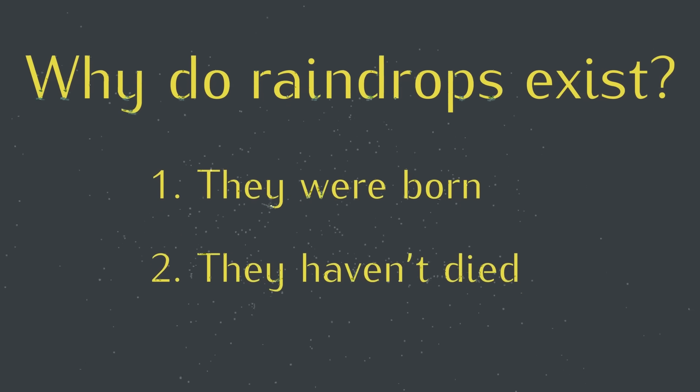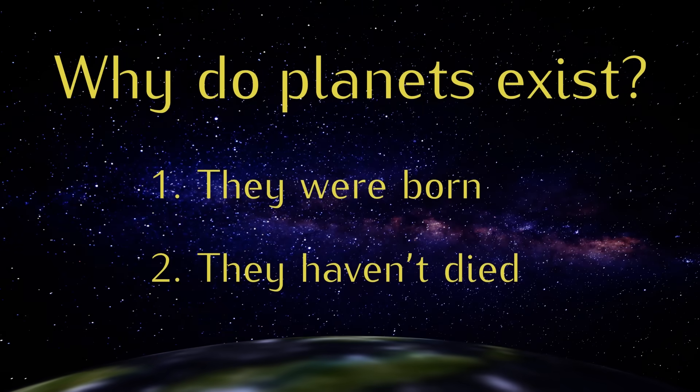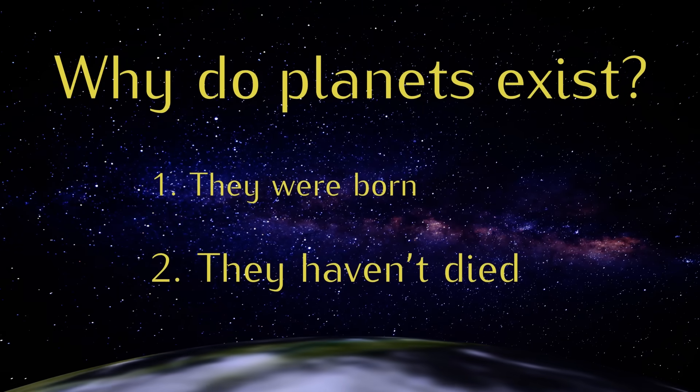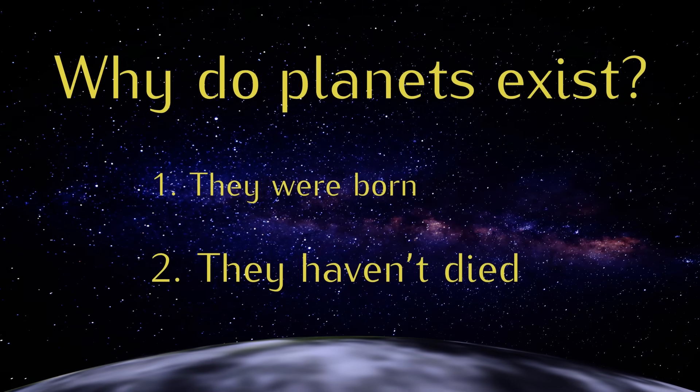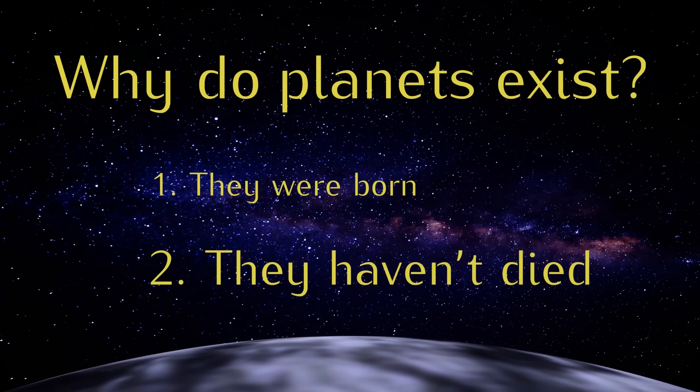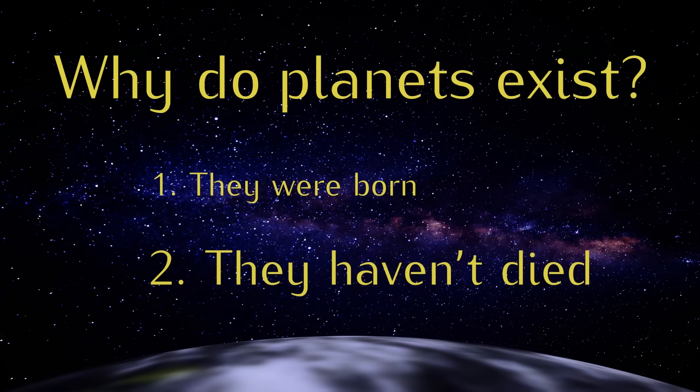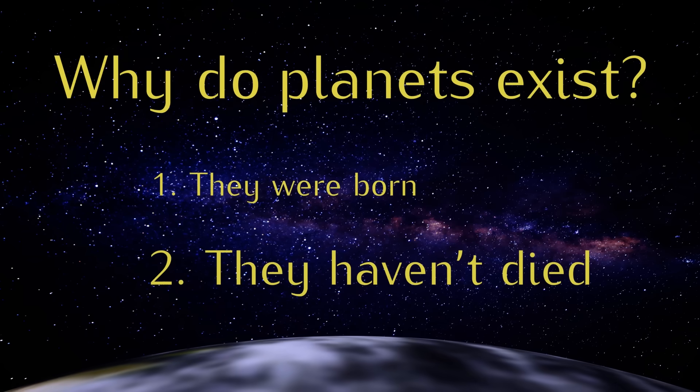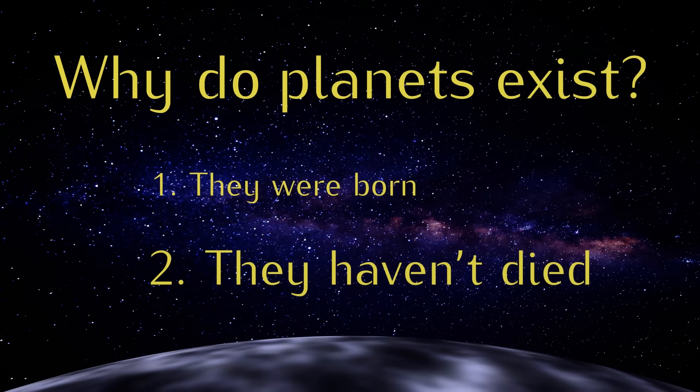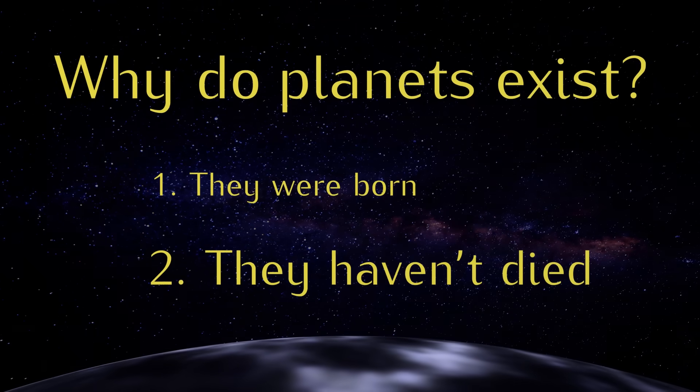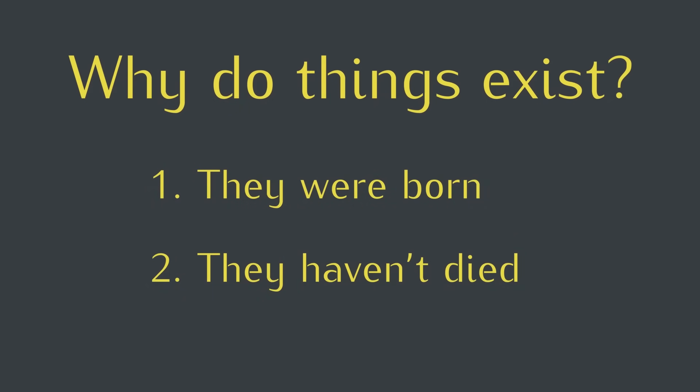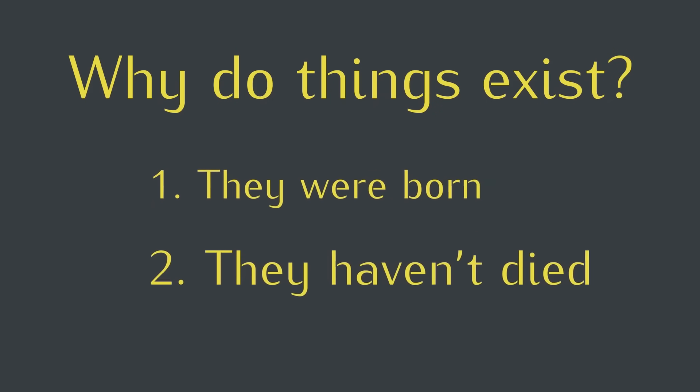A different example is planets or stars. Unlike raindrops, they don't form very often at all, but they more than make up for it by lasting a long time. When we look up in the sky, or just at the ground, we see planets and stars. They're also common, even though they do it in a very different way. Any kind of thing that exists strikes some balance at being good at one or both of these two things.